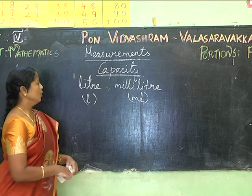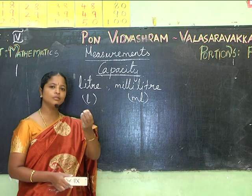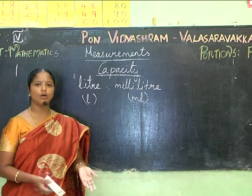For smaller quantities, for example when you are drinking a syrup, we use the smaller unit, which is mL. We usually take 5 mL of medicine. But when buying milk or a can of water, we use liters.